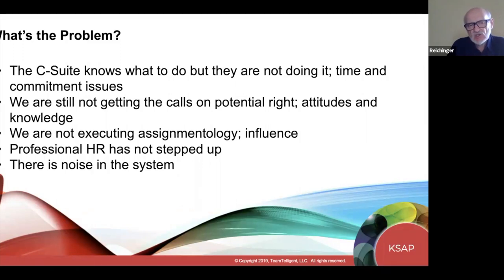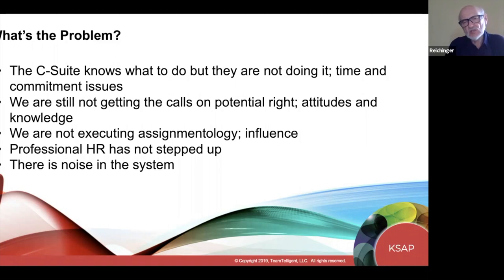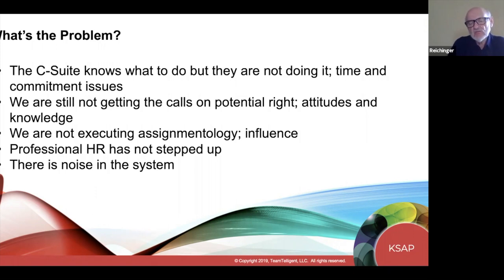I'm getting disappointed with professional HR. Those who've followed my public speaking know I believe professional HR is responsible for this system — when you put it in the hands of the line, it doesn't work right. I hear a lot of HR groups now saying they're a support function, that the accountability for making calls on potential and moving people in assignmentology is a line responsibility. I don't believe that. I think HR has backed away from the responsibility. And there's also noise in the system — the strengths movement offering ways to fix what isn't working. So those are the five problems.